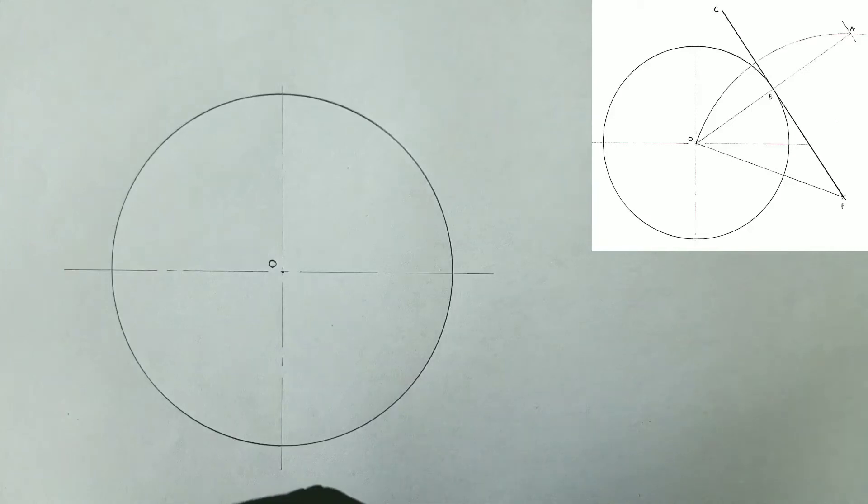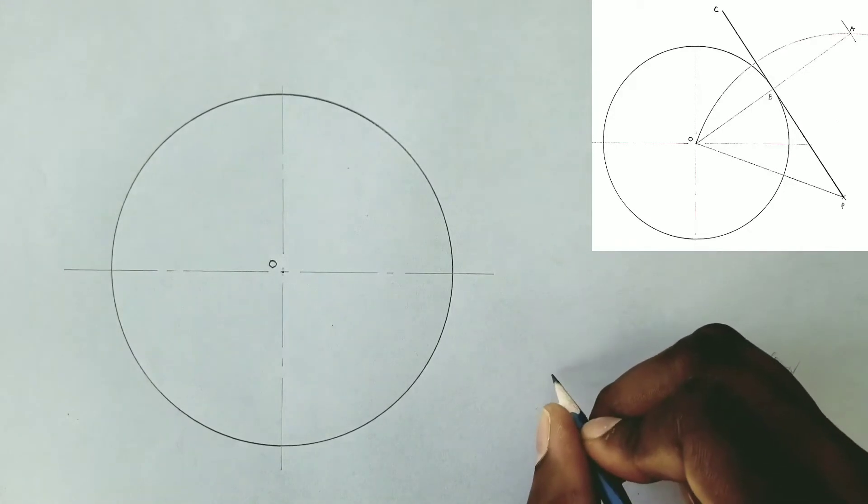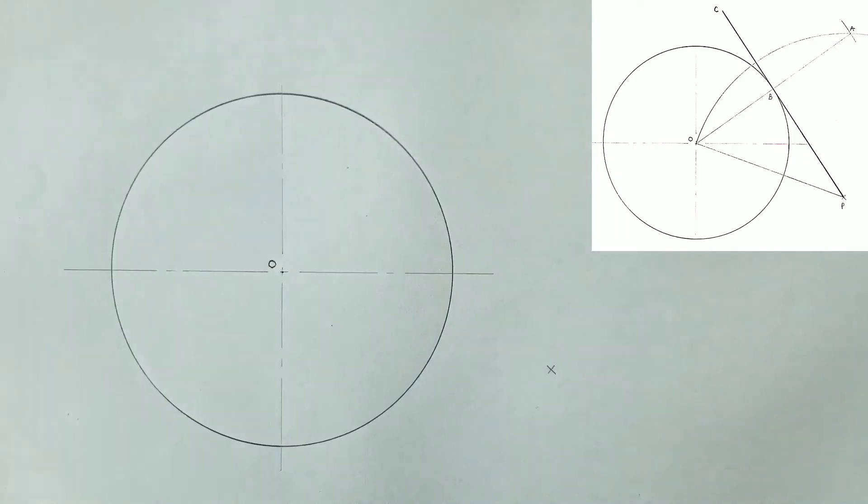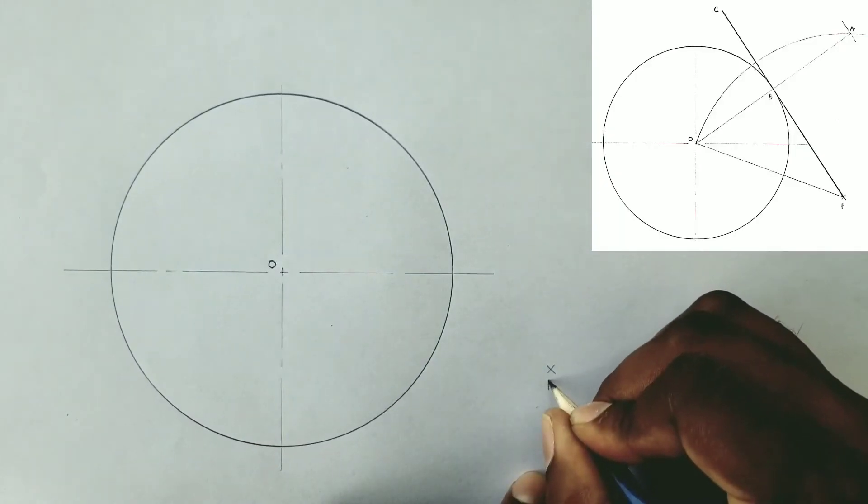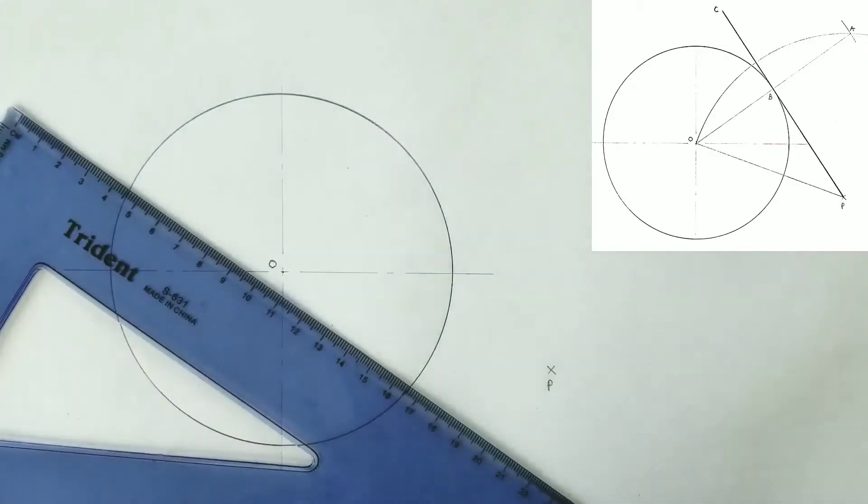We will now identify a point outside the circle and label this point P. Use a small x to identify a point. From the center of the x, we will draw a line to the center of the circle O.